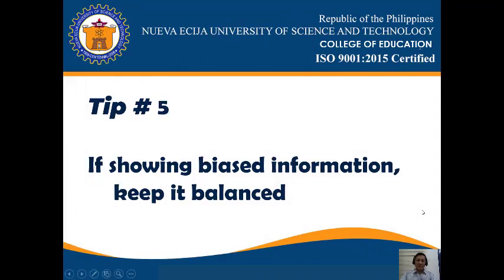Tip number five: if showing biased content, keep it balanced. During the 2016 presidential campaign, I would occasionally show clips from various talk shows or parodies featuring content about the candidates, trying to balance this so that both candidates were featured roughly equally. In some instances, while I thought content was good or funny, I felt it better not to use it if it had something I considered off-color or overly controversial.